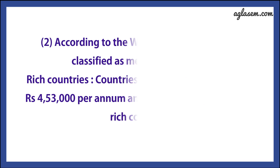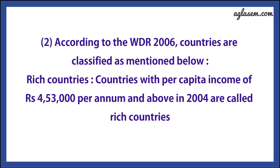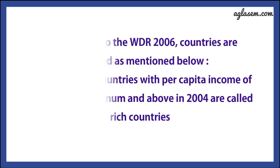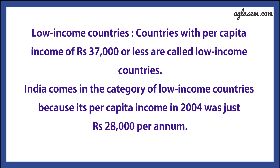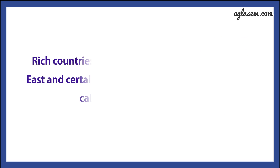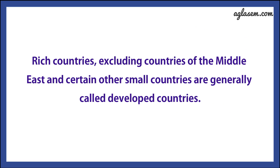According to WDR of 2006, countries are classified as: first, rich countries — countries with per capita income of Rs. 4,53,000 per annum and above in 2004 are called rich countries. Second, low income countries — countries with per capita income of Rs. 37,000 or less are called low income countries. India comes in the category of low income countries because its per capita income in 2004 was just Rs. 28,000 per annum. Countries of the Middle East and certain other small countries are generally called developed countries.